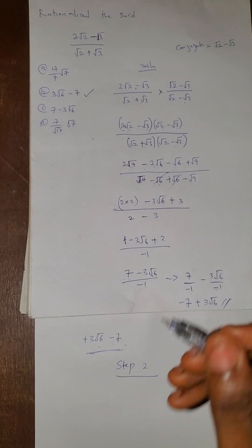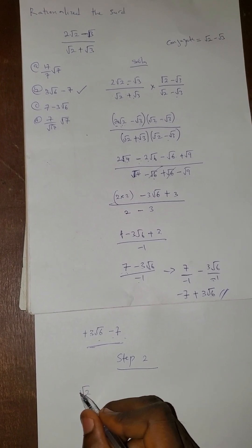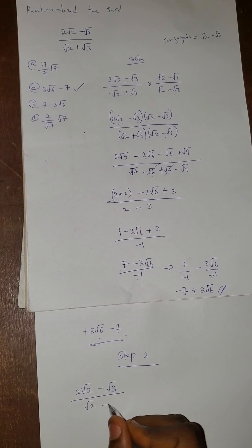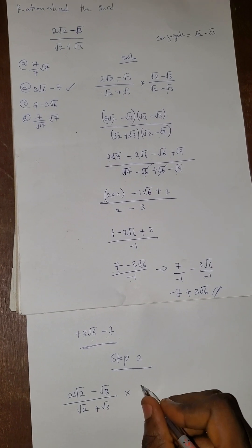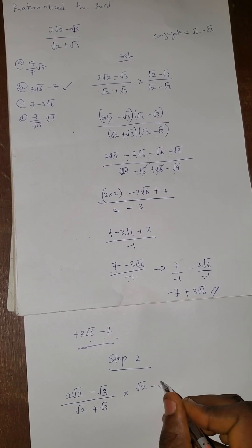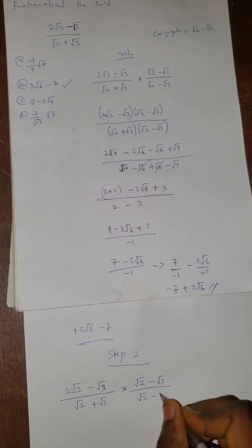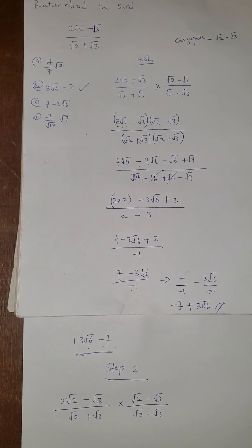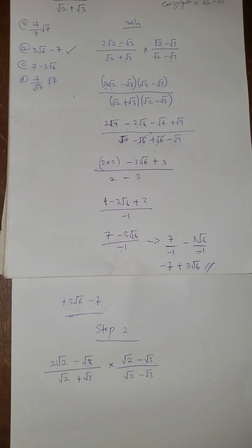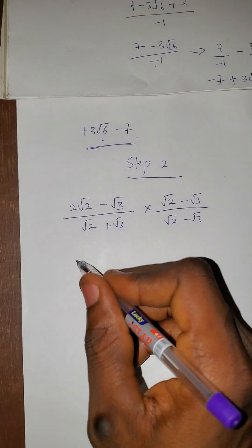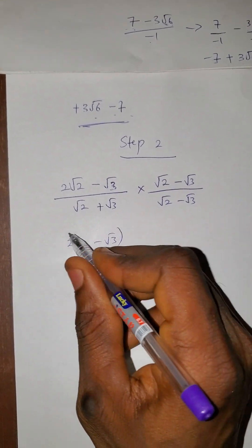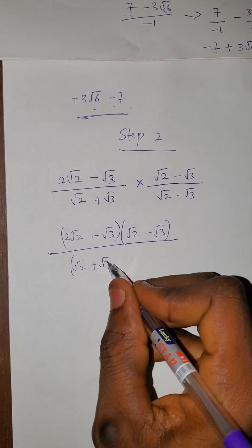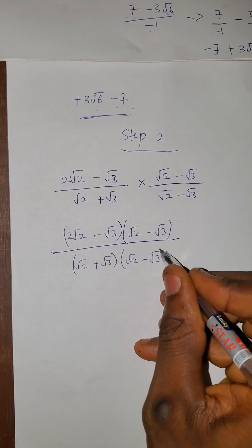Now let me go to Step 2. I want to use the same question but follow a slightly different process — still rationalization. We have √2 plus √3 in the denominator, so we multiply both by the conjugate. Please be patient, because after Step 2 I'll go to Step 3: the calculator method.